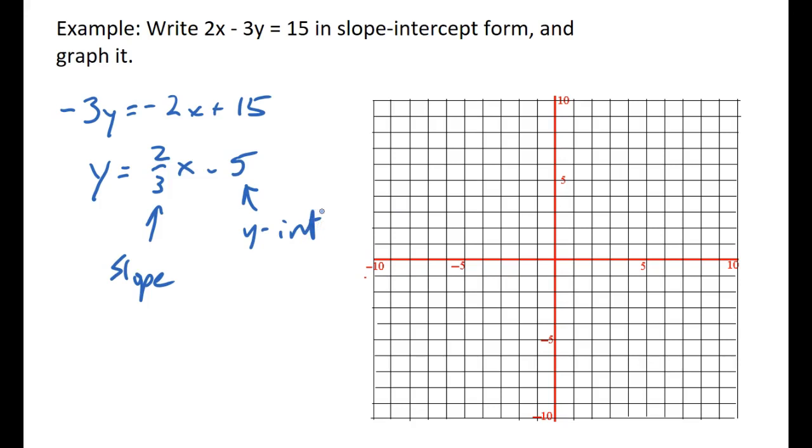So here's how you graph it. I'm going to start at -5 on the y-axis because that's my y-intercept. And then this tells me to go up 2 and over 3, and it's positive. So I'm going to go up 2 over 3, and there's my next point. And I can keep going up 2 over 3 to get as many points as I want. We only need 2 to graph a line. I like to do 3 just to verify. So there's our line.